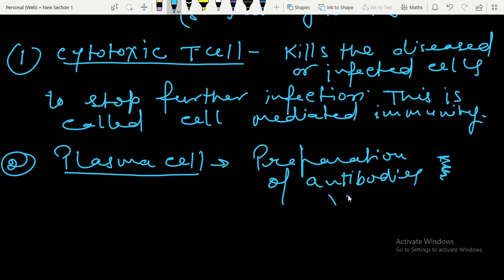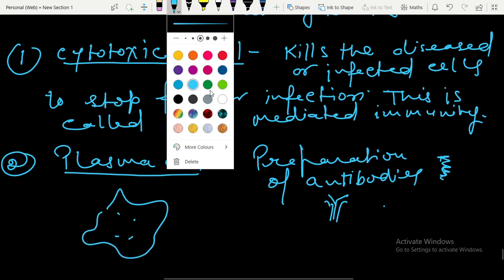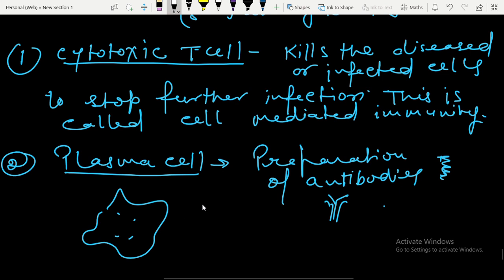These antibodies are Y-shaped proteins. So, these plasma cells prepare, it forms Y-shaped proteins. And these Y-shaped proteins are antibodies.